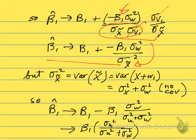But σ²X̃, the variance of X̃, is just the variance of X plus wᵢ, so it's σ²X, the variance of the true X, not the one that's mismeasured, plus the variance of w, because we're assuming there's no covariance, no correlation between X and w.